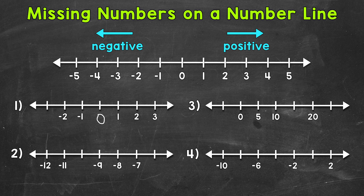Let's continue to count down. Then we have negative one, negative two, and then negative three. Once we have those missing numbers filled in, we can double check. Let's count up now and see if those missing numbers are correct: negative three, negative two, negative one, zero, one, two, three. So those are the correct missing numbers.